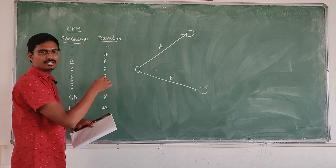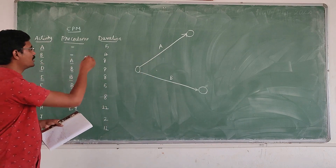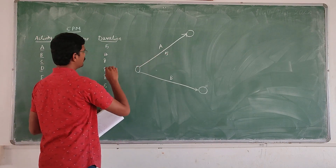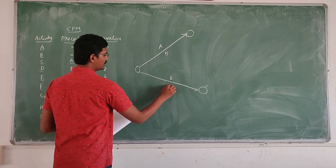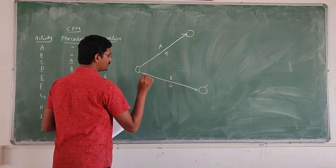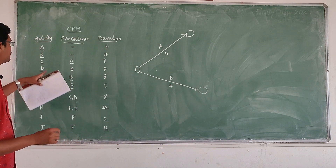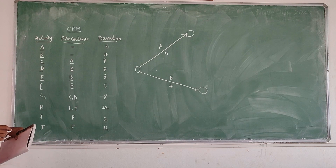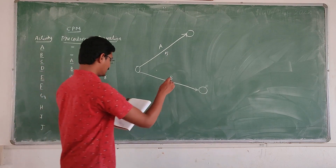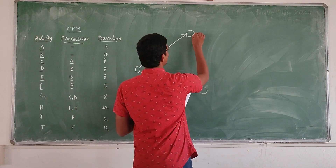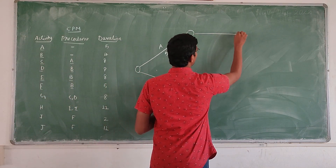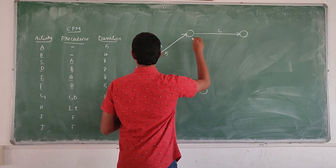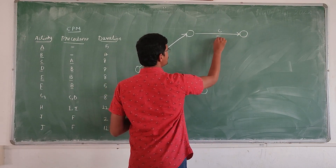For A activity and B activity, there is no precedence and we can put the duration over here. Next, for C the A is the precedence activity, so now we can draw the C activity. The corresponding duration is 8.